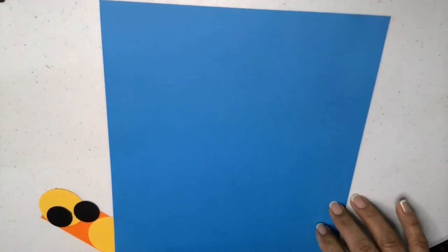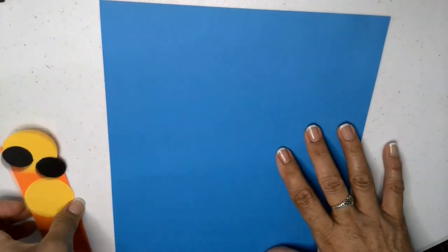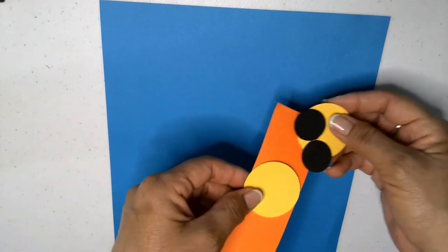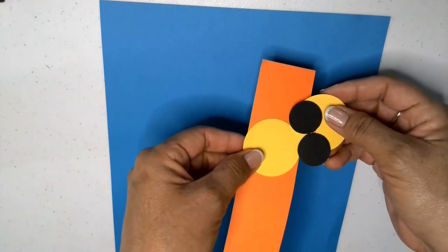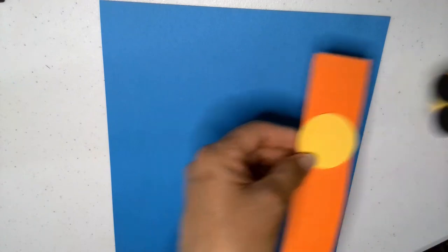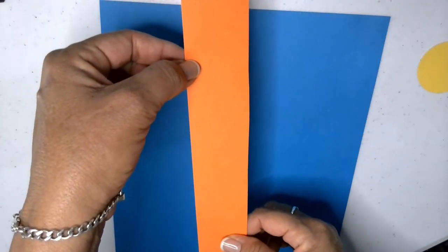I have my paper on the table. You can see that I did pre-cut circles. Two big yellow ones and two black ones that are smaller. And I have one strip of orange paper.